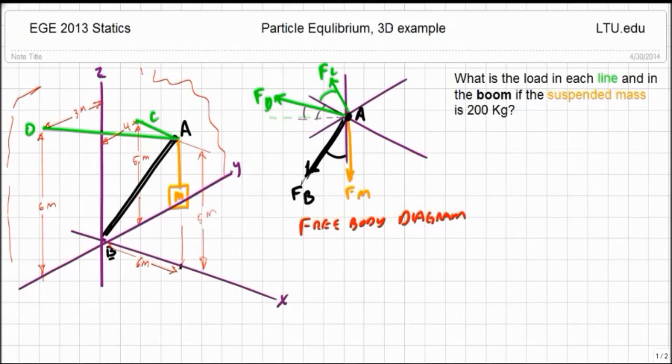So, we've got a plan of action. We're going to write out the position vectors. Given the position vectors, we can find the unit vectors in the appropriate direction. Multiply that by our unknown force, we get an expression for each of the three forces. We can sum the forces in the various directions, make them equal to zero, and we should have an answer before very long.